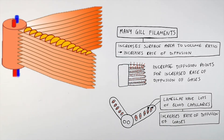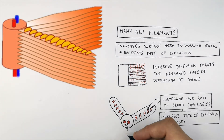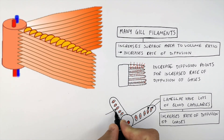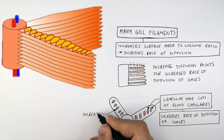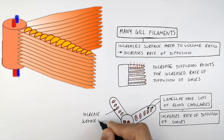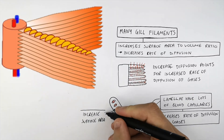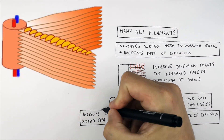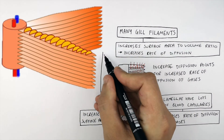These are the arteries of the gills, which supply the gills with blood and take blood away from the gills. Remember, the lamellae have an increased surface area which will therefore increase the rate of diffusion of gases.